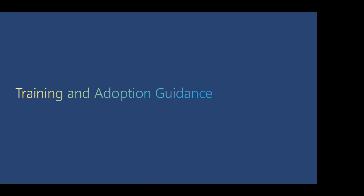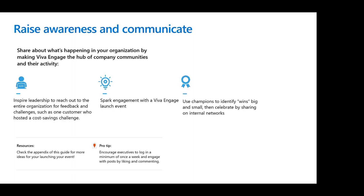We're now at Training and Adoption Guidance. All of this information is available online — you do not have to do it all yourself. The Adoption Guide for Viva Engage is available; I've posted the link in the chat. The things we know that make adoption of Viva Engage successful: our leaders use the technology. If they lead by example, share posts on a regular basis, and use Viva Engage for announcements, then employees will follow them, see those updates, engage, ask questions, and make comments. Leading by example is really important to driving adoption of Viva Engage.